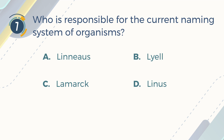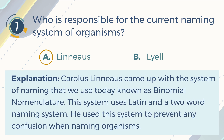The correct answer is A. Linnaeus. Explanation: Carolus Linnaeus came up with the system of naming that we use today, known as binomial nomenclature. This system uses Latin and a two-word naming system. He used this system to prevent any confusion when naming organisms.